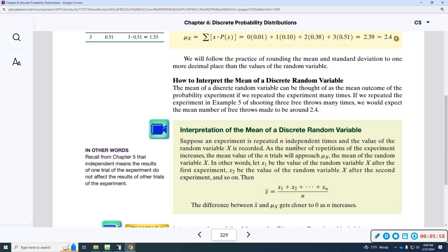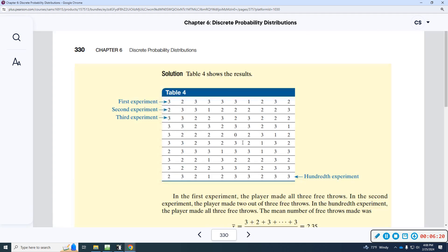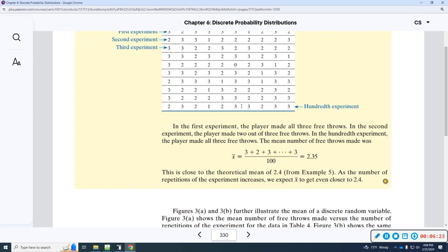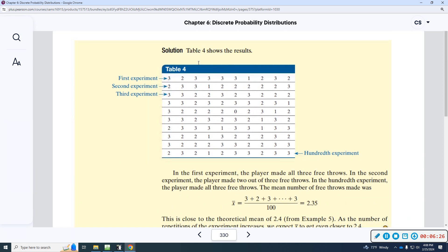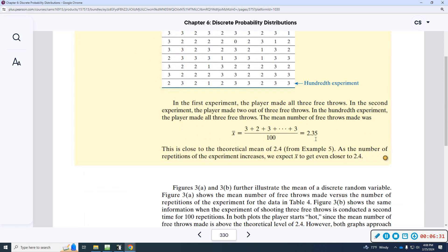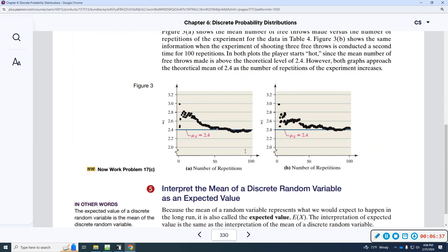This is interpretation of the mean of a discrete random variable again. X is a repeated experiment. The number of repetitions is increased. The mean of the value of n trials will approach mu. As we do this over and over again, the expected value will approach mu, which is the mean for discrete. Here's a table with a bunch of repetitions. They add them all up and divide by 100. And they got 2.35, which is really close to 2.4. That's what that's saying here.